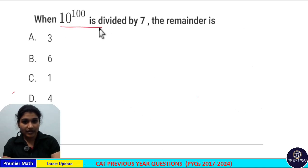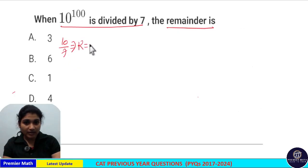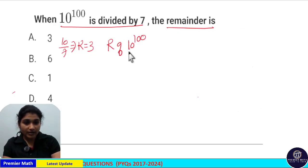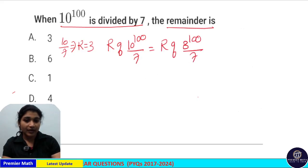When 10 raised to 100 is divided by 7, the remainder is: 10 divided by 7 gives remainder 3, which means the remainder of 10^100 divided by 7 is the same as the remainder of 3^100 divided by 7.